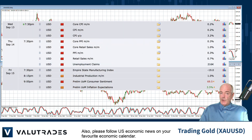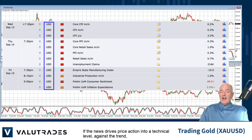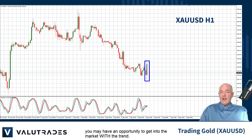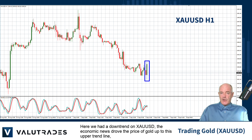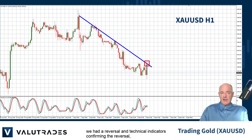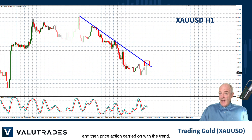Also, please follow US economic news on your favorite economic calendar. If the news drives price action into a technical level against the trend, you may have an opportunity to get into the market with the trend. Here we have a downtrend on XAU USD. The economic news drove the price of gold up to this upper trend line, and we had a reversal and the technical indicators confirming the reversal. And then price action carried on with the trend.